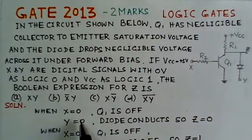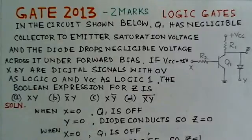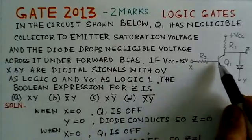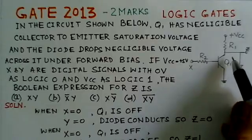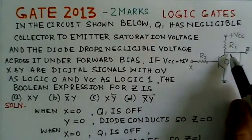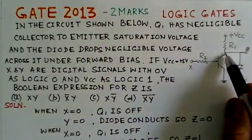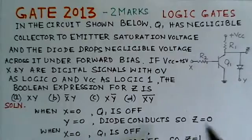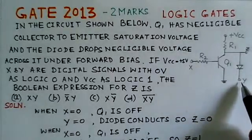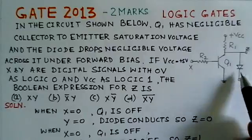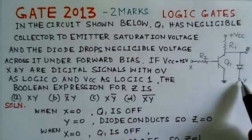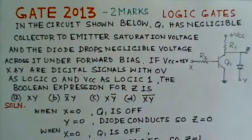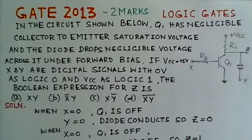Suppose we select when X is 0, the first combination, X is 0 and Y is 0. When input X is 0 here, this transistor would be off. Q1 would be off. That means there will be a voltage across its collector. But here Y is 0. When Y is 0, this diode would be conducting. And once this diode is conducting, it will make the output to be 0. Z would be 0.